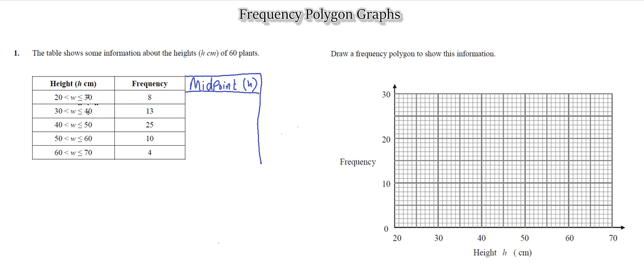So the first one would be 20 plus 30, let's just do that here. 20 plus 30 divided by 2, that makes 50 divided by 2 which is 25. So it's quite clear it would be 25 in the middle.